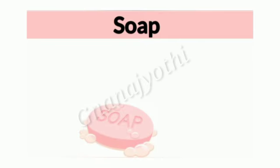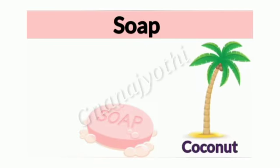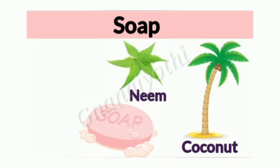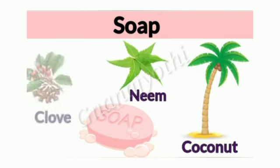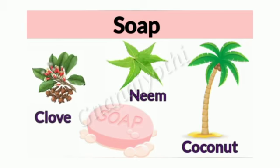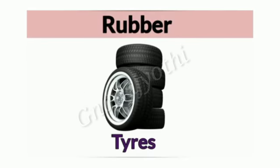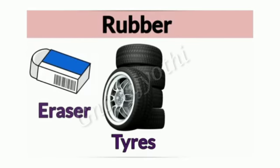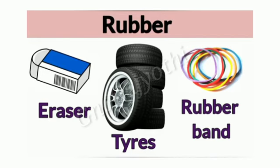Soaps are also prepared from coconut, neem, and clove. Next is rubber — from rubber we get tires, erasers, rubber bands, etc.